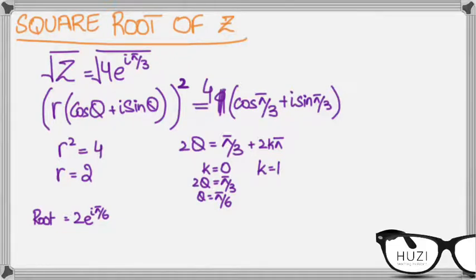So this would be 2 theta equals pi by 3 plus 2 pi, resulting in 7 pi by 3, right. So theta would be 7 pi by 6.